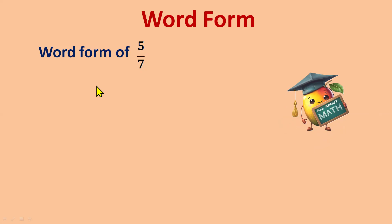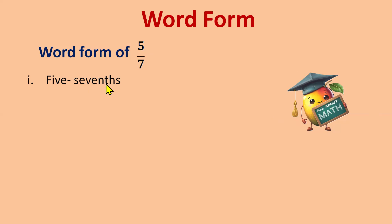The first way is very important because when you're doing numeral form, you'll be getting questions in this first form only. The first form is 'five sevenths' — we write the ordinal number 'sevenths', not just 'seven'. We use 's' here because five is written; if they had written one only, then 's' would not be written. So it is 'five sevenths'.